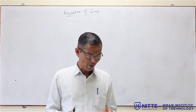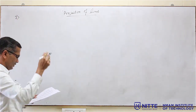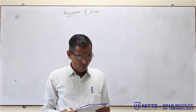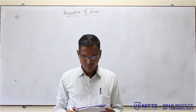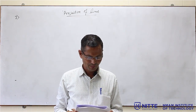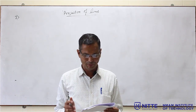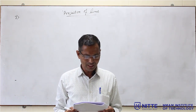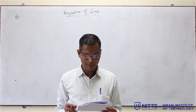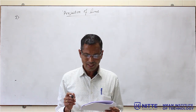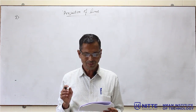We will solve the next problem. Problem number 7 in the question bank: The top view PQ of a straight line is 60mm and makes an angle of 45 degrees with the XY line. The end P is 10mm in front of VP and 30mm above HP. The difference between the distances of P and Q above HP is 35mm. Draw the projections and determine the true length and true inclinations with respect to VP and HP.